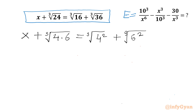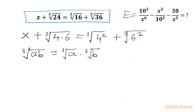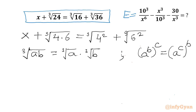Now I will use two properties from exponents. Property 1: ∛(a×b) can be written as ∛a × ∛b. Property 2: (aᵇ)ᶜ can be written as (aᶜ)ᵇ — that is, we can swap the powers.